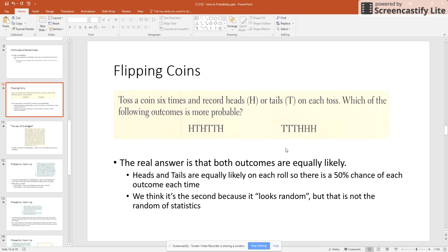The second one, it says there that we think it's the second because it looks random, but it's not the random of statistics. I disagree with that statement. The second one to me looks very not random because they're in order. The first one, to me, glancing at it looks more probable, but they really both are because each one of those coin flips is independent.